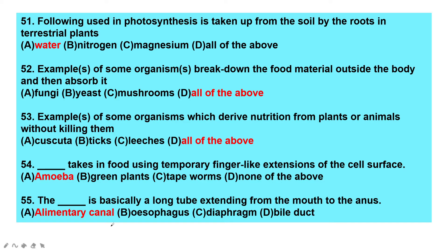The following used in photosynthesis is taken up from the soil by the roots in terrestrial plants — it is water. Nitrogen, magnesium, and all of the above are wrong answers.